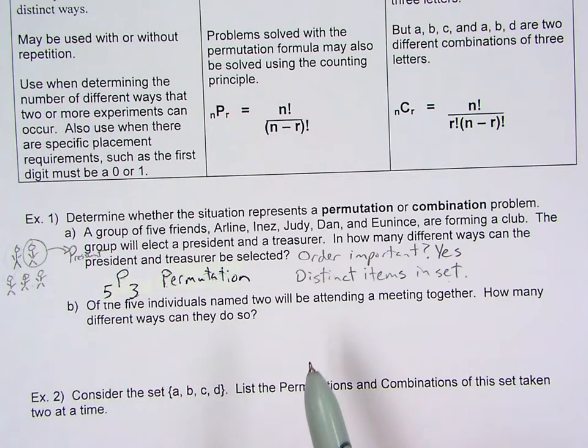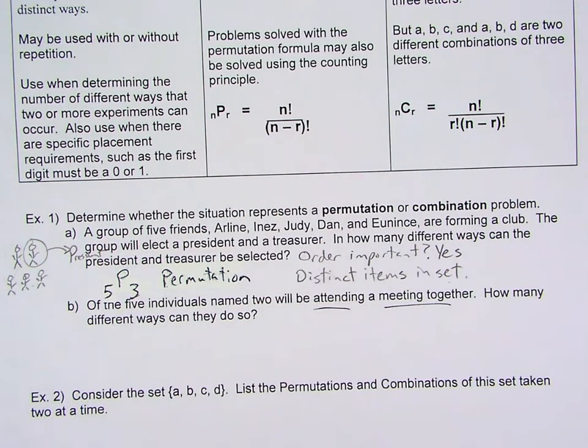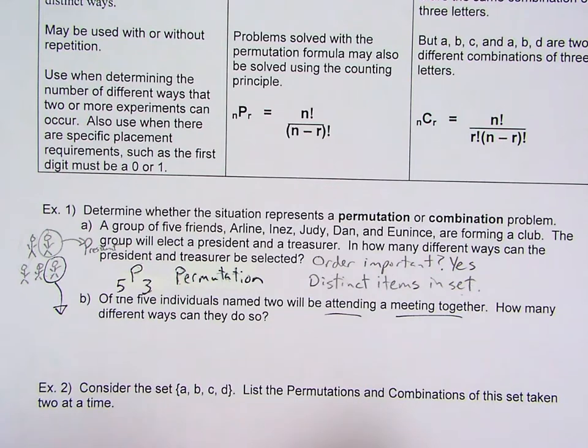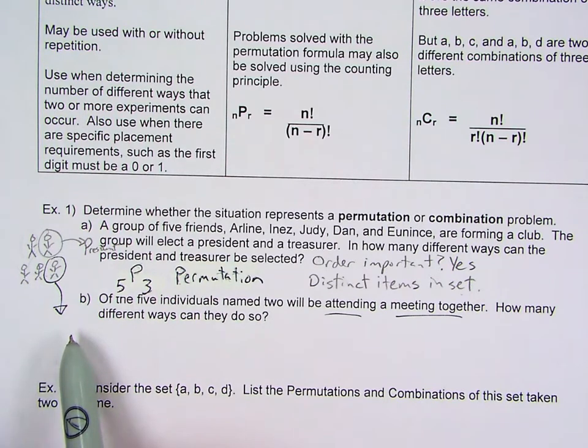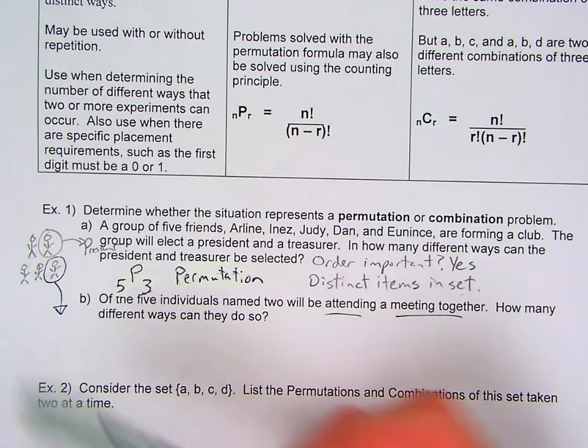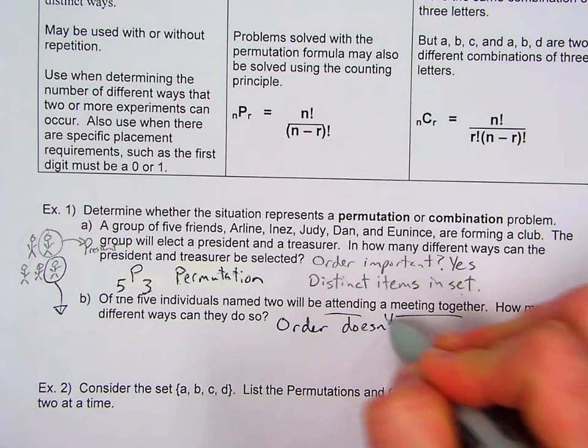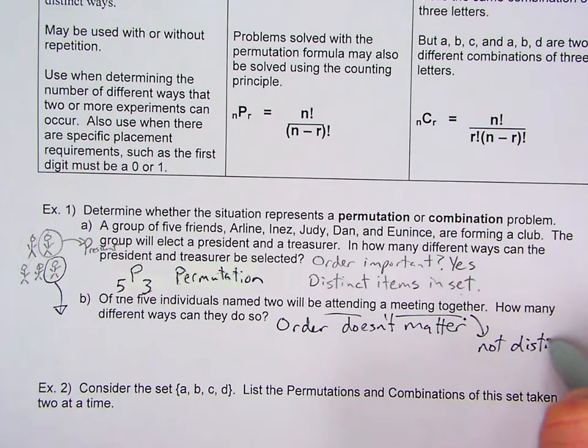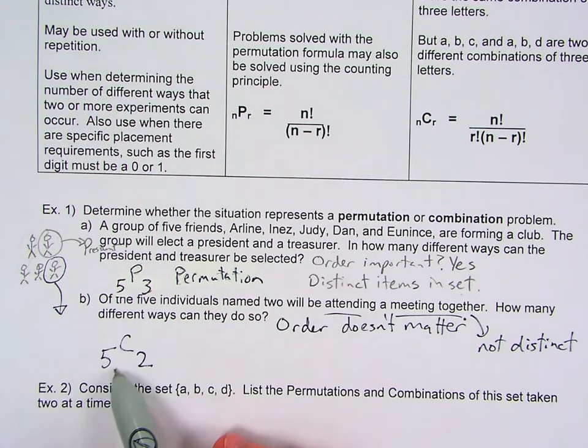Now, same type of problem here. Of the five individuals, two of them are going to be attending a meeting together. So now, just any of the five here could be chosen to attend the meeting. We're going to choose two of them. So if this person is chosen to attend the meeting, these four people still have a chance to attend the meeting. So because the order that we didn't pick this person and that person, it doesn't really matter. So this has to be a combination.